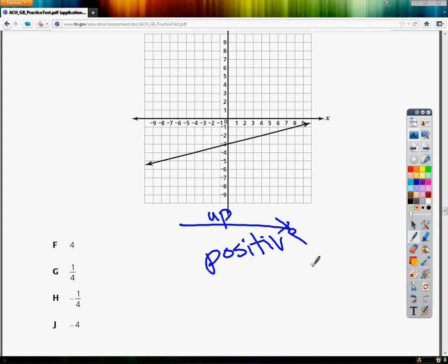Your life is better in this type of problem if you just go ahead and scout the problem before you do anything else. It can't be negative, so H and J are already out. So from here, all I need to do is figure out if it's 4 or 1 over 4.